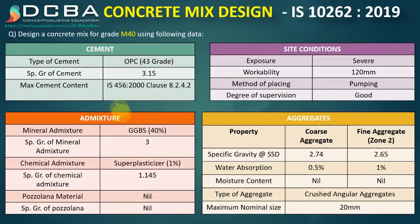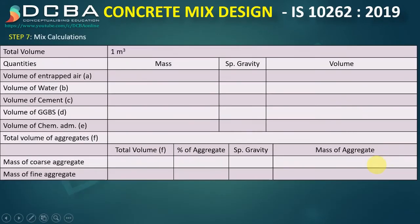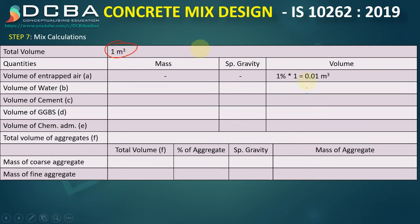Now for proportioning per 1 m³ of concrete. Specific gravities: cement 3.15, GGBS 3.0, superplasticizer 1.145, coarse aggregate 2.74, fine aggregate 2.65. Volume of entrapped air = 1% of 1 m³ = 0.01 m³. Volume of water: mass 156 kg, SG 1.0, so volume = 156/1000 = 0.156 m³. Volume of cement: 260 kg, SG 3.15, volume = 260/(3.15×1000) = 0.0825 m³.